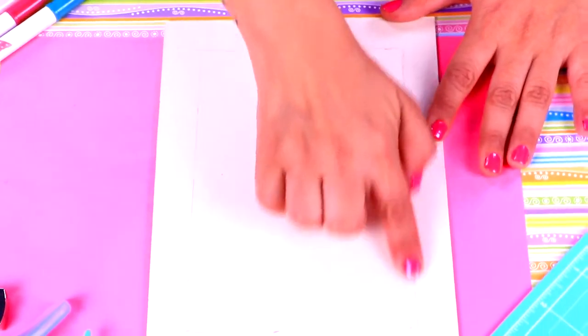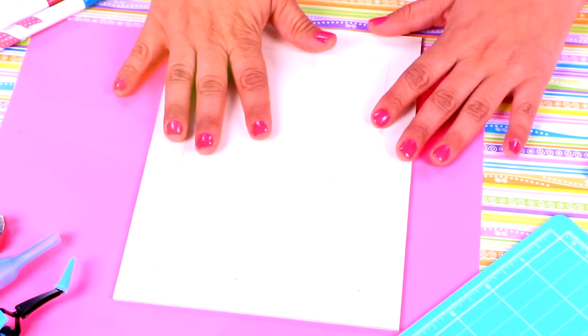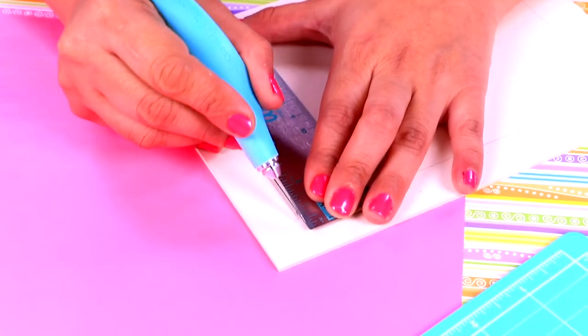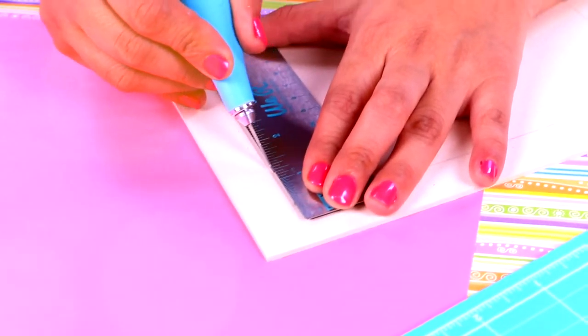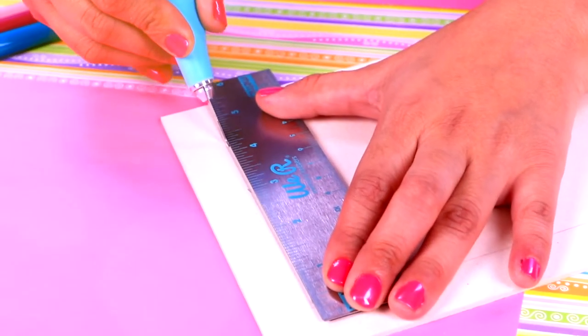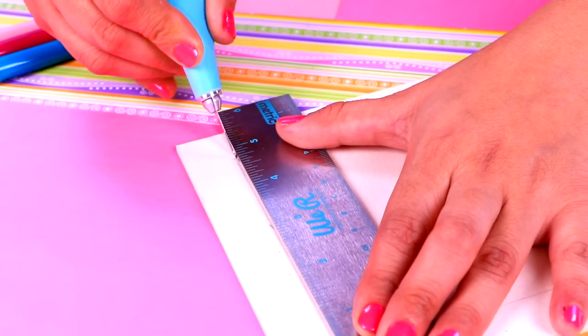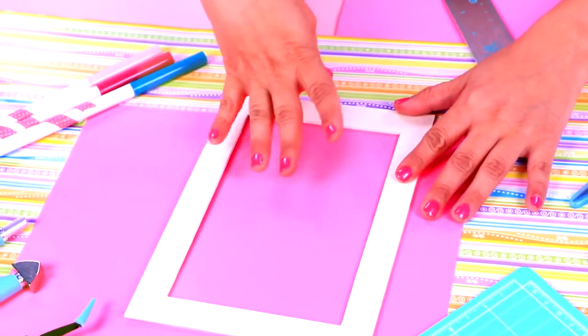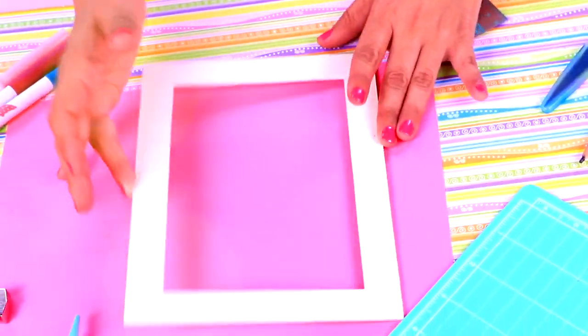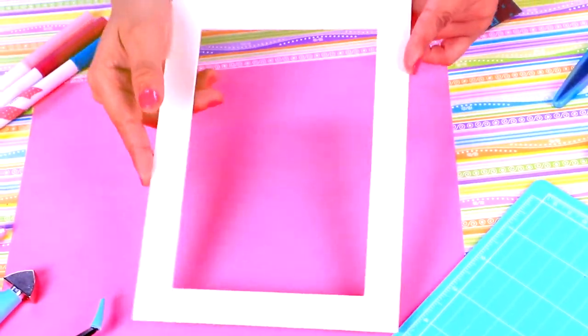After we've marked the rectangle, this is how it will look. And then, with the help of a cutter, we are going to cut it! We can use a ruler to guide us so we cut it straight! Look! It kinda looks like a photo frame! We are going to need 4 pieces like this one, so let's do them!